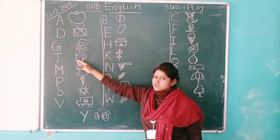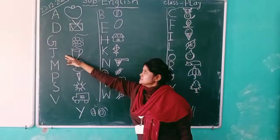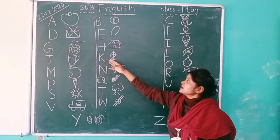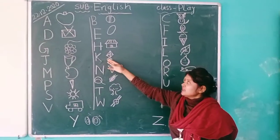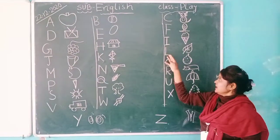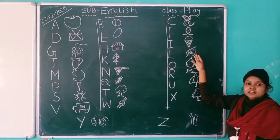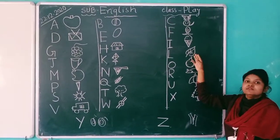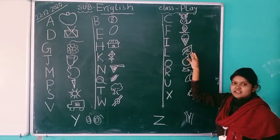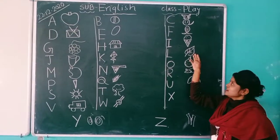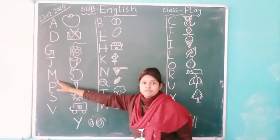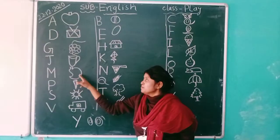Next, J. J for jar. K. K for kite. L. L for leaf. What is the color of leaf? Green. Okay. Next, M. M for mango.